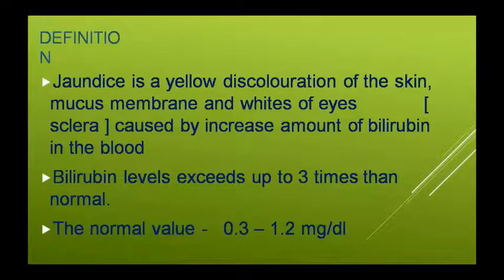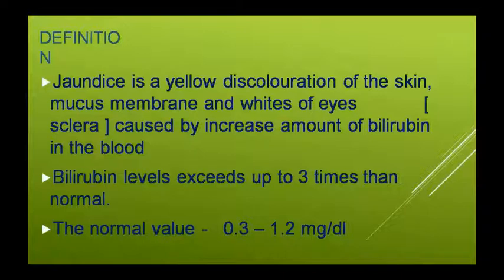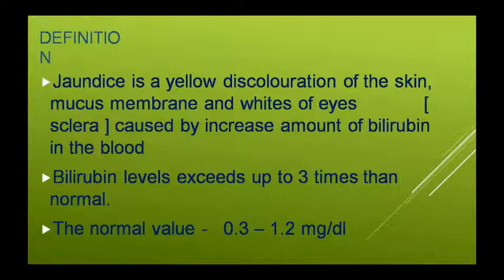Jaundice में skin, mucous membrane और sclera का discoloration हो जाता है — whites of eyes यानि sclera पीले पड़ जाते हैं — क्योंकि blood में bilirubin का amount बहुत ज़्यादा बढ़ जाता है, लगभग तीन गुना normal से। इसकी normal value 0.2 से 1 mg per dl तक होती है, कुछ में 1.2 mg per dl तक होती है।